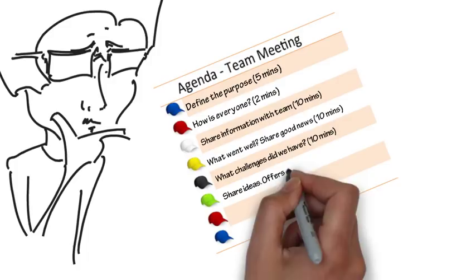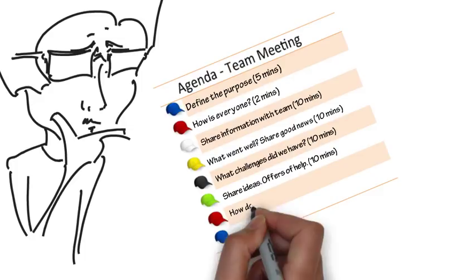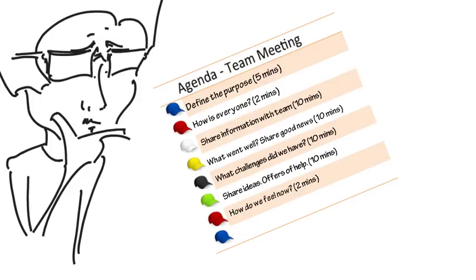The team then puts the red hat back on to talk about how we feel now, having had all of the conversations that we've just had. And finally, you as the facilitator put the blue hat on to define agreed actions and the next steps that were agreed.